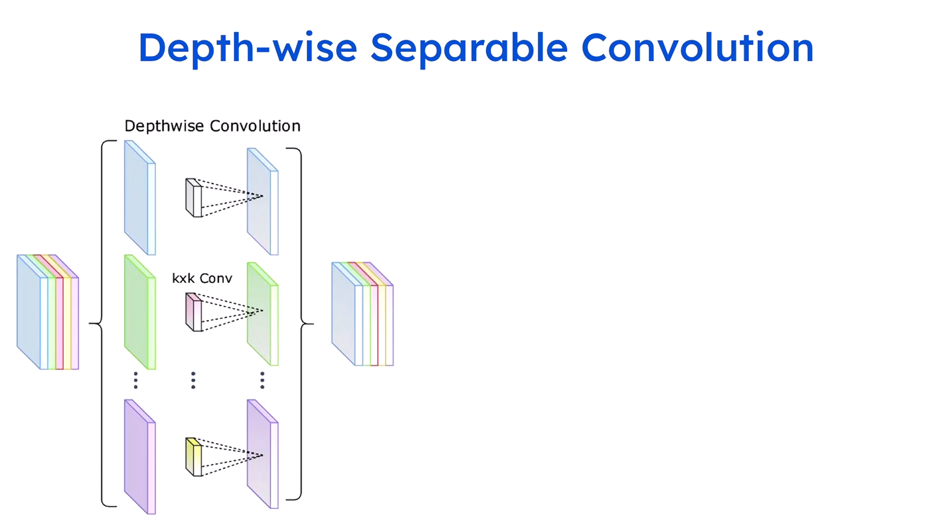Let's go ahead and try to understand what is DepthWise Separable Convolution and why it is used in Artificial Neural Networks. DepthWise Convolutional Neural Network was introduced in MobileNet's Efficient Convolutional Neural Network for Mobile Vision Application research paper.